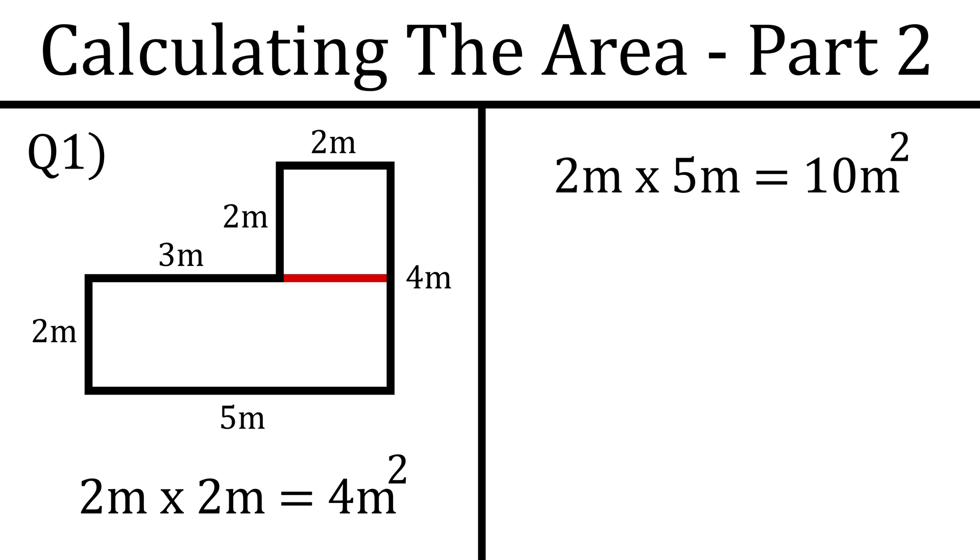The next thing we want to do is add these two areas together. We take 4 meters squared plus 10 meters squared. You just add them like you'd add anything else. You can imagine it as one meter squared plus one meter squared equals two meters squared. So 4 meters squared plus 10 meters squared, you just add the numbers together. That gives us 14 meters squared, so the total area is 14 meters squared.